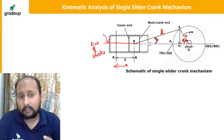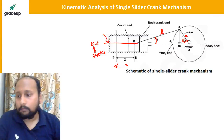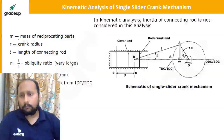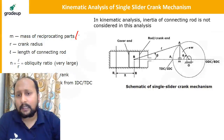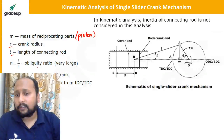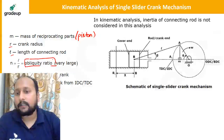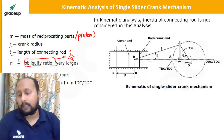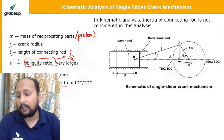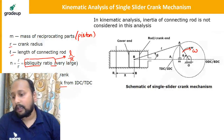These are the different terminologies we'll be using again and again. Now let's consider: mass of the reciprocating body (piston) is m, crank radius is r, and length of connecting rod is l. The obliquity ratio is the ratio of length of connecting rod to radius of crank: n = l/r. Omega is the angular velocity of the crank, and theta is the angle turned by the crank from IDC.